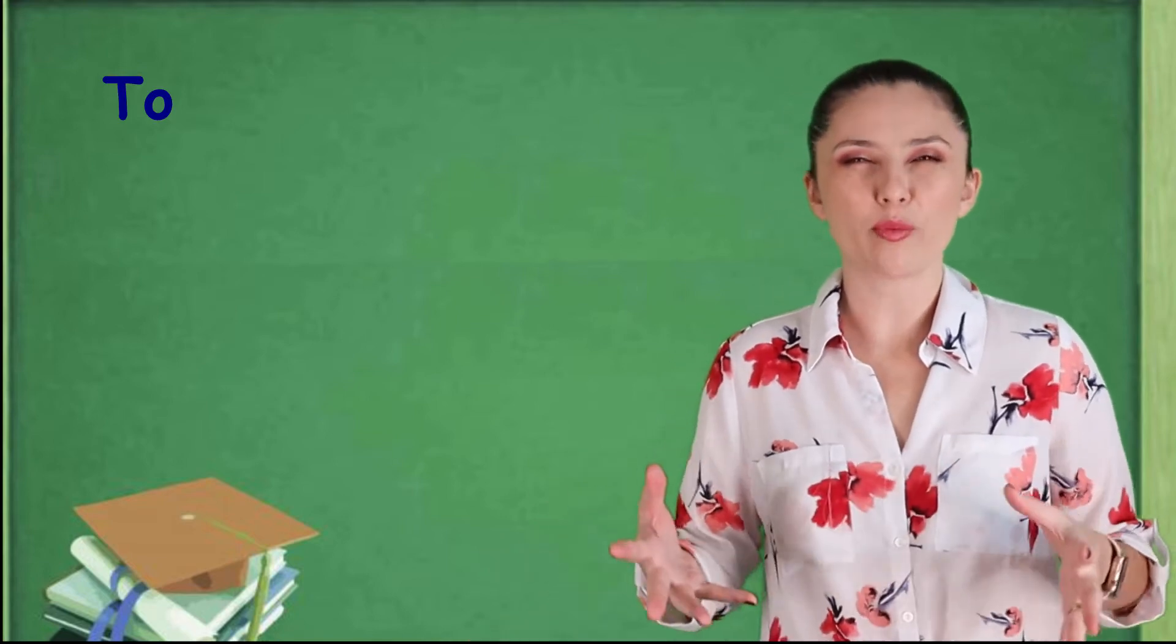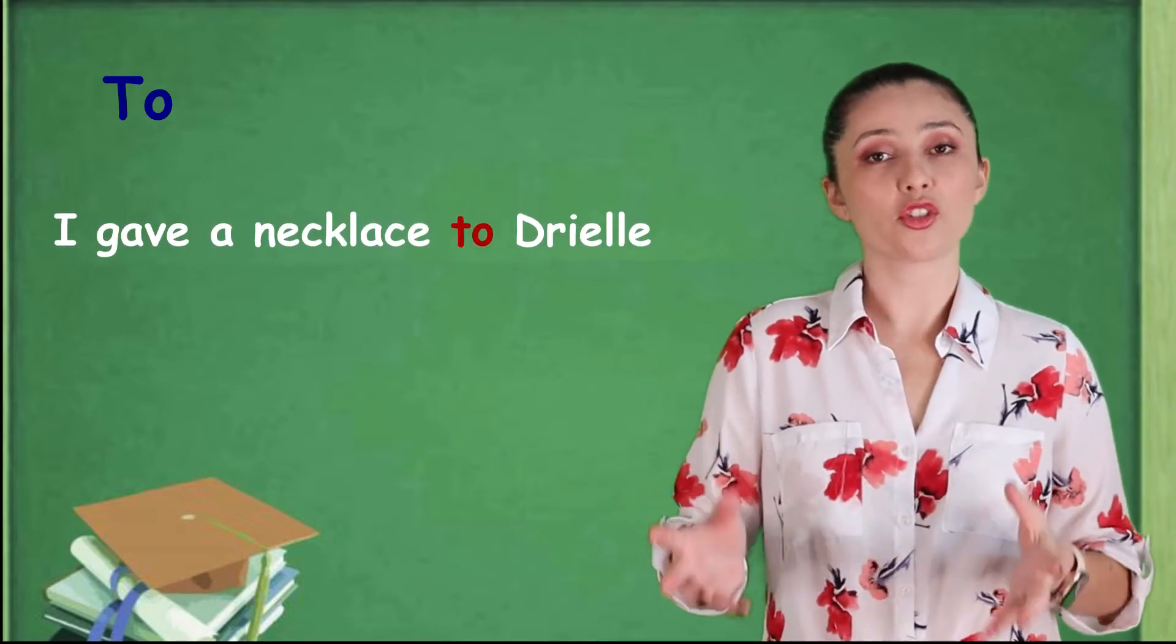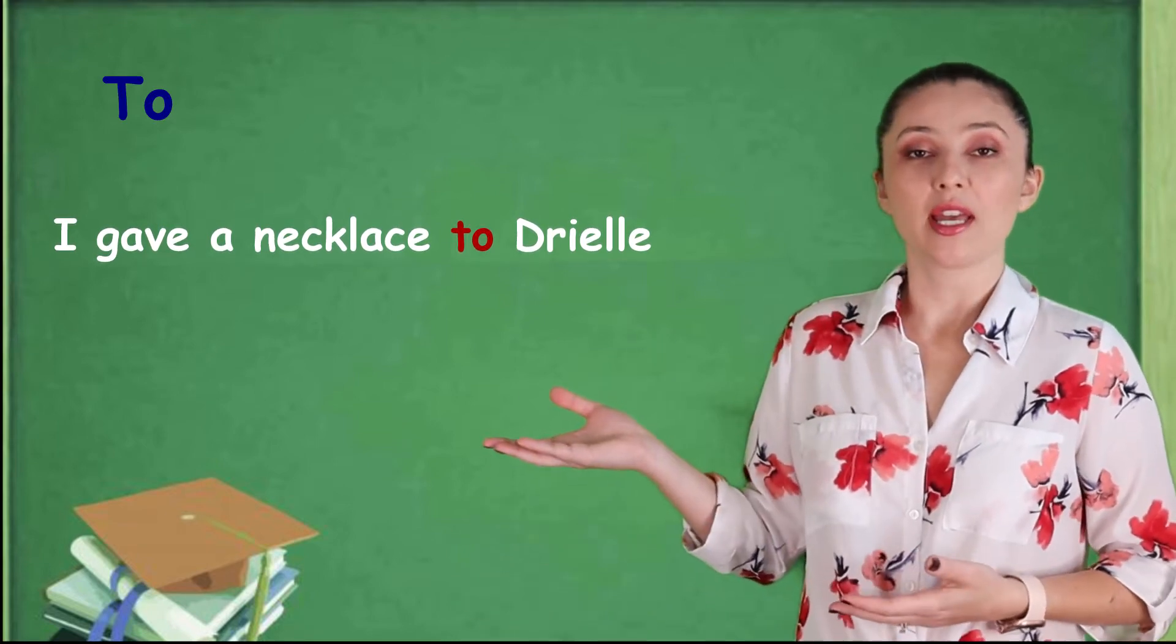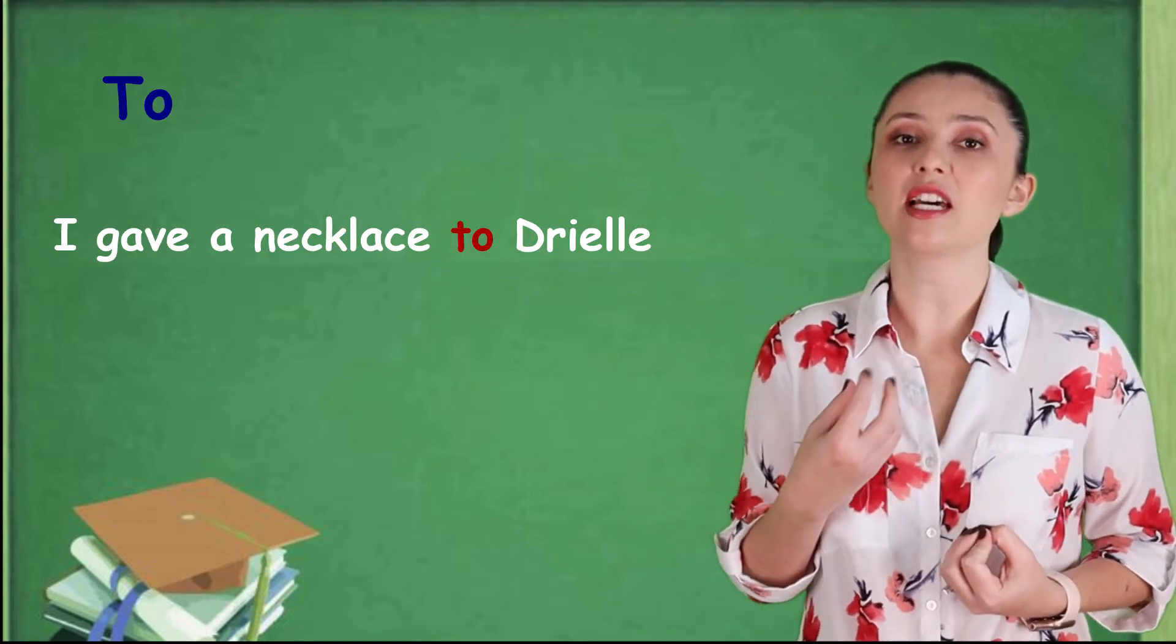You can also use the preposition to when a person is receiving the action, or the object is receiving the action. What I mean by that? So let's see the phrase example. I gave a necklace to Drielli. Here the preposition to, it is referring that Drielli is receiving the action.